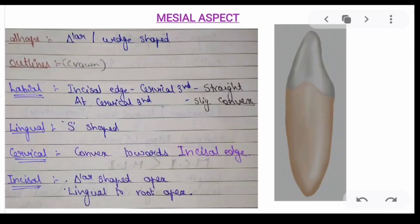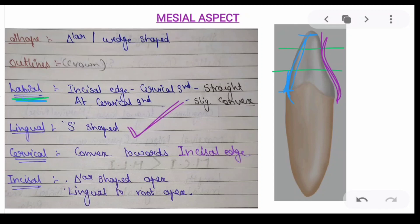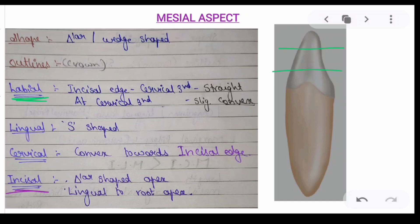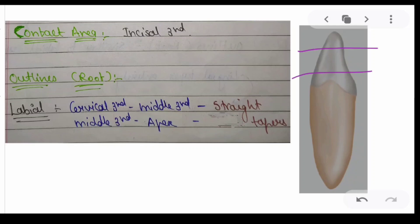Coming to the mesial aspect: the shape of the crown is triangular or wedge-shaped. Looking at the outlines — on the labial aspect, from the incisal edge to the cervical third it is straight, but at the cervical third it shows a slight convexity, which is a notable characteristic. The cervical outline is curved towards the incisal edge. The incisal outline has a triangular-shaped apex. The contact area is located at the incisal third.